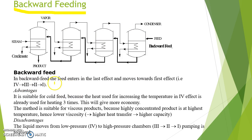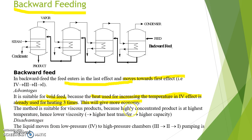In backward feeding, the feed enters the last effect and moves towards the first effect. The advantage of this method is that it is suitable for cold feed, because the heat used for increasing the temperature in the fourth effect has already been used for heating three times, giving more economy. This method is also suitable for viscous products because the highly concentrated product is at the highest temperature, hence it has lower viscosity.